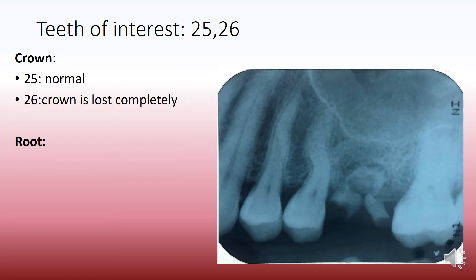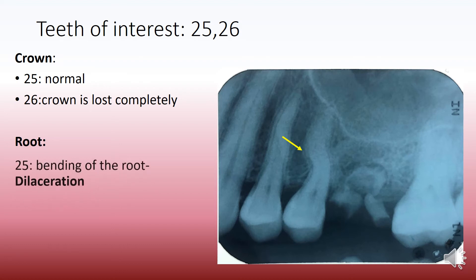The teeth of interest are 2-5 and 2-6. In 2-5 we see that it has a normal crown, but in 2-6 the crown is completely lost and what we see is only the roots. If you notice the root of 2-5, you will see that there is bending of the root, and this is what we call dilaceration.